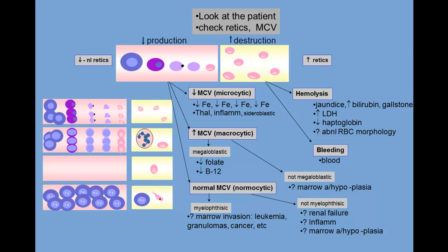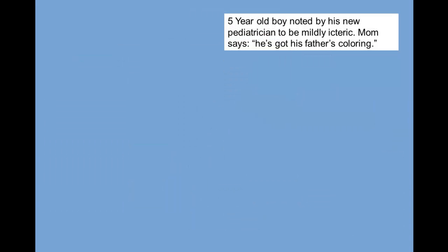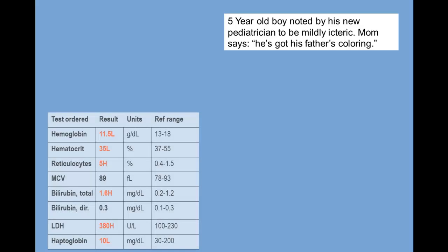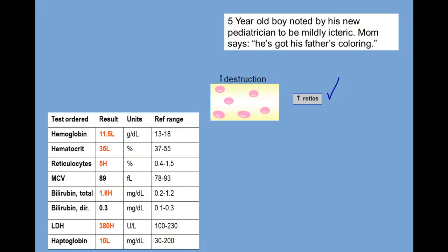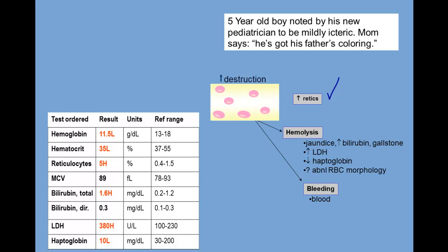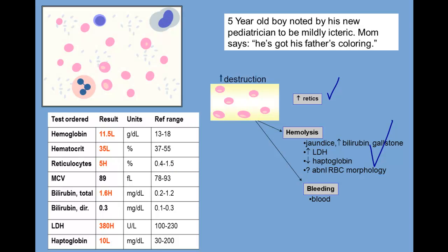A five-year-old boy is noted by his new pediatrician to be mildly icteric. Mom says he's got his father's coloring. His lab results show that he is anemic, with low hemoglobin and hematocrit. His reticulocyte count is high, putting him in the category of anemia of increased destruction — either hemolysis or bleeding. Looking at the hemolysis characteristics, the patient is jaundiced, with increased LDH and decreased haptoglobin. Peripheral smear shows abnormal red cell morphology: spherocytes. A child with spherocytic hemolytic anemia and positive family history is likely to have hereditary spherocytosis, just like this boy.